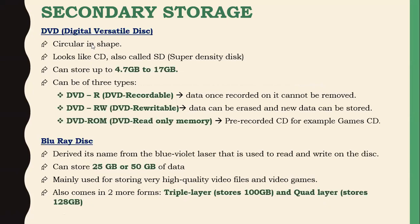DVD stands for Digital Versatile Disc or Digital Video Disc. It is also called SD — Super Density Disc. It is circular in shape like a CD but more costly. The storage capacity of a DVD ranges from 4.7 GB to 17 GB. DVDs come in three types: DVD-R (recordable — data cannot be changed later), DVD-RW (re-writable — data can be erased and new data stored), and DVD-ROM (read-only memory with pre-recorded data, such as printer or scanner installation discs).